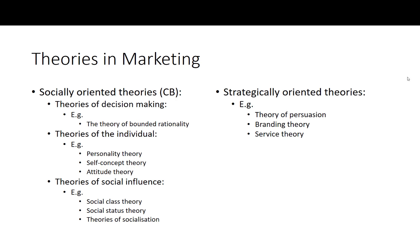We tend to deal with more socially oriented theories rather than physical theories like those in physics or astrophysics. Some of the socially oriented theories we'll encounter this semester are theories of decision making — the theory of bounded rationality, rational decision making, and emotional decision making.